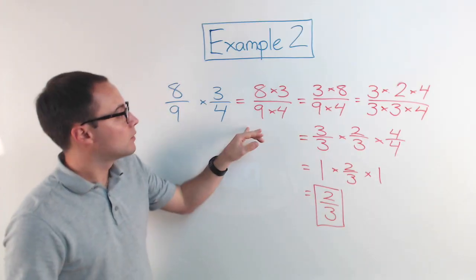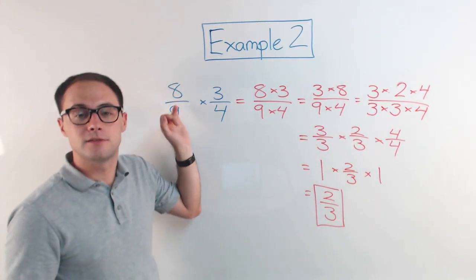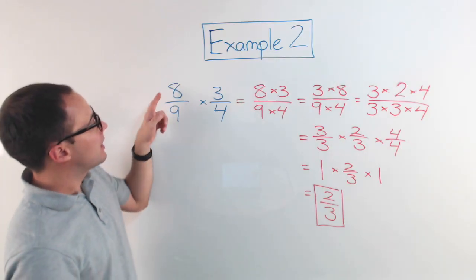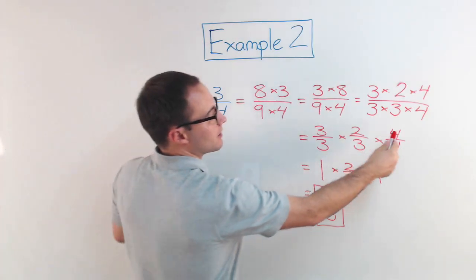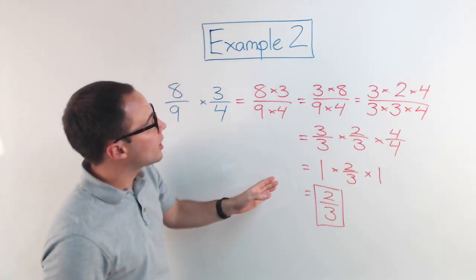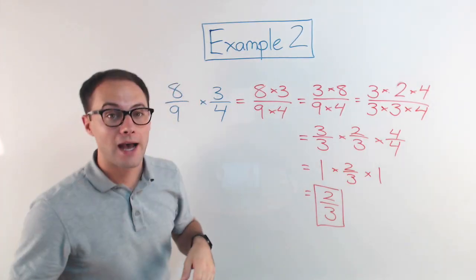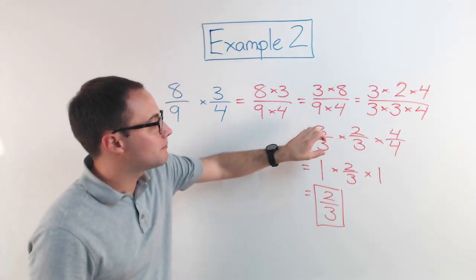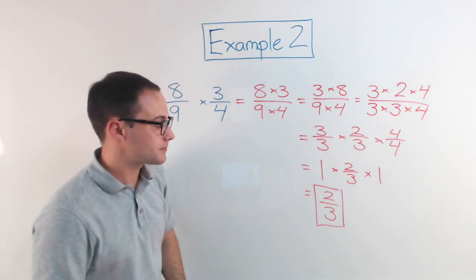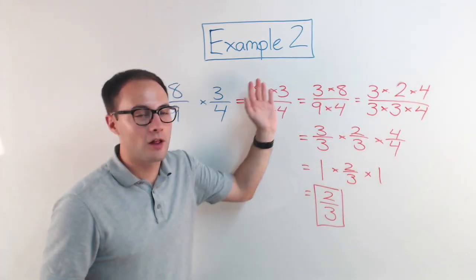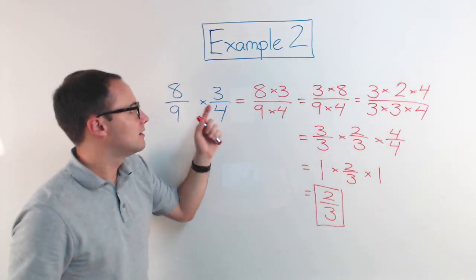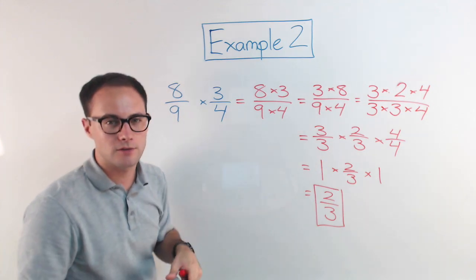All we did was we tried to break these numbers apart into factors so that we could find common factors. So we know that eight and four had a common factor of four here. Right. Which let us kind of cancel it out. It became one. We also found that three and nine had a common factor of three. So same thing. We can basically kind of cancel that out and that becomes one. And then what we're left with is just two-thirds. You will definitely not need to show all of this. OK. Let's show you one more way of how to do essentially this much quicker and simpler. But it's important to know where that comes from. OK. So let's try it one more time.